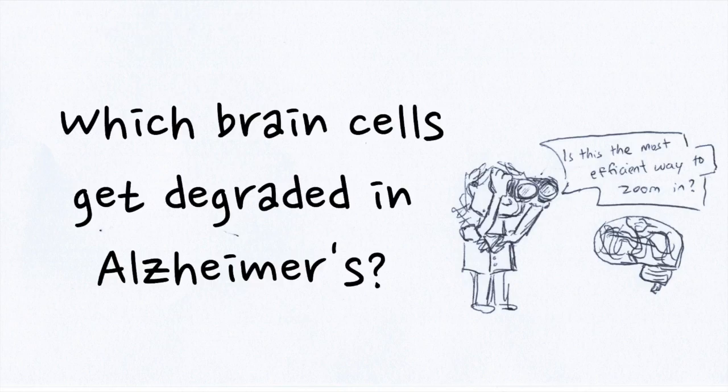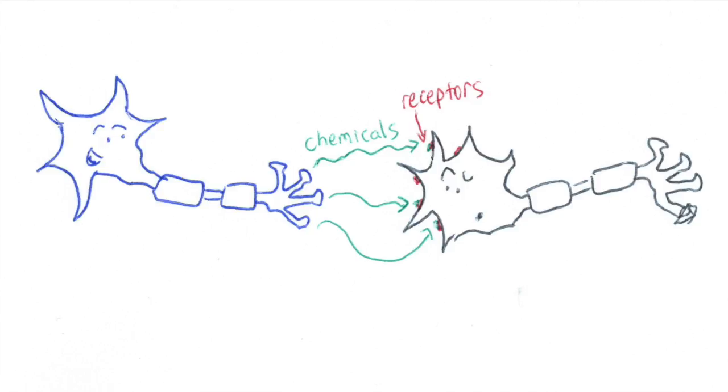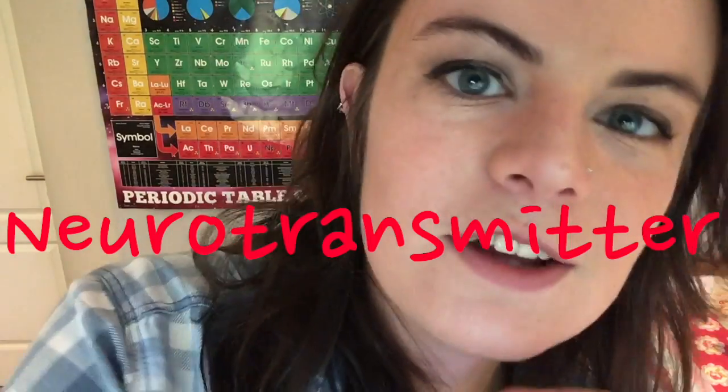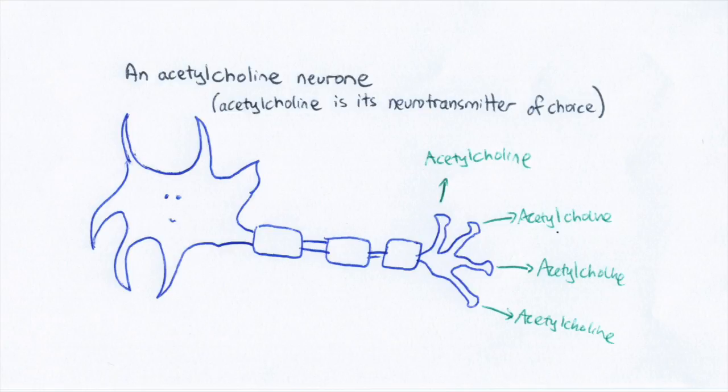Which brain cells get degraded in Alzheimer's? Brain cells, or neurons, communicate with each other through receptors. Chemicals released from one neuron attach to and interact with receptors on another neuron — that's how messages get passed along. It's kind of like a Mexican wave of thought. Different neurons use different chemicals as their messenger of choice, and all of these messenger chemicals are generally known as neurotransmitters — they transmit messages in the brain. Whereas Parkinson's is generally associated with the loss of the neurotransmitter dopamine, Alzheimer's is associated with the loss of a different neurotransmitter: acetylcholine. In Alzheimer's, brain cells which normally pass on signals by releasing acetylcholine degrade and die, reducing acetylcholine levels in the brain.